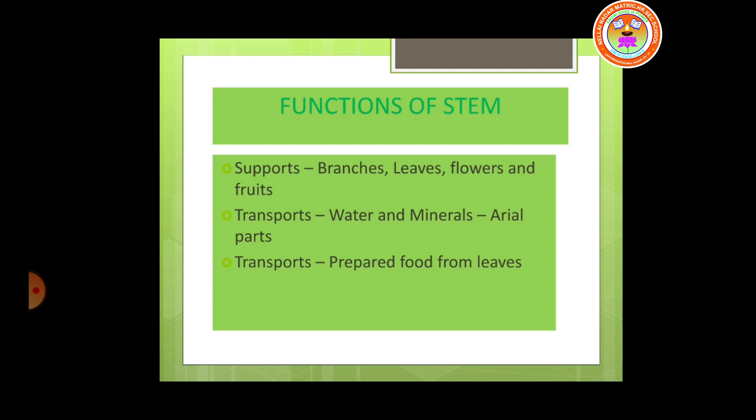The stem also transports food materials prepared by the leaf. By the process of photosynthesis, starch is produced. The starch from the leaf is transported to all parts of the plant. Additionally, the stem helps in storing food materials produced by the plant.